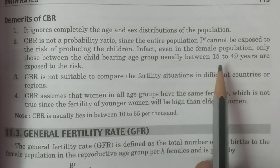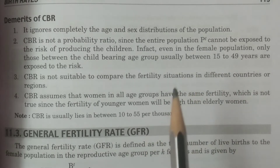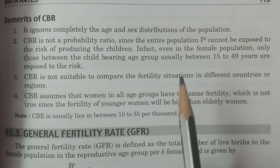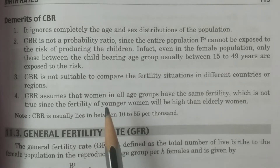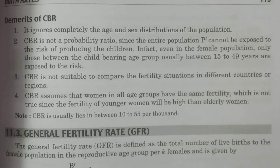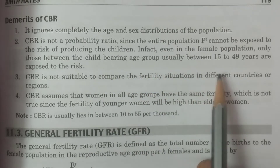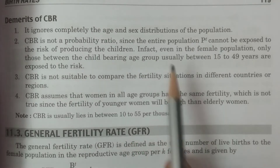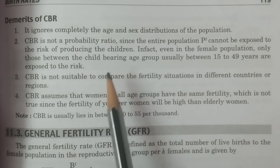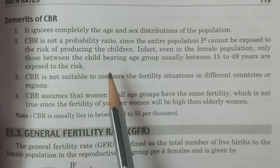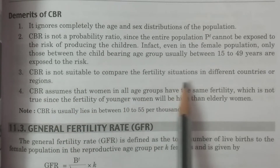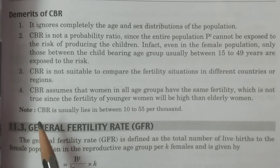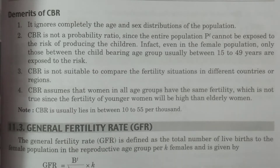If we consider the ratio of births to the female population in the child-bearing age group (15 to 49), it would be a probability ratio. But CBR uses the total population, not this specific group, so CBR is not a probability ratio. This is the second demerit. The third demerit is that CBR is not suitable to compare fertility situations in different countries or regions.